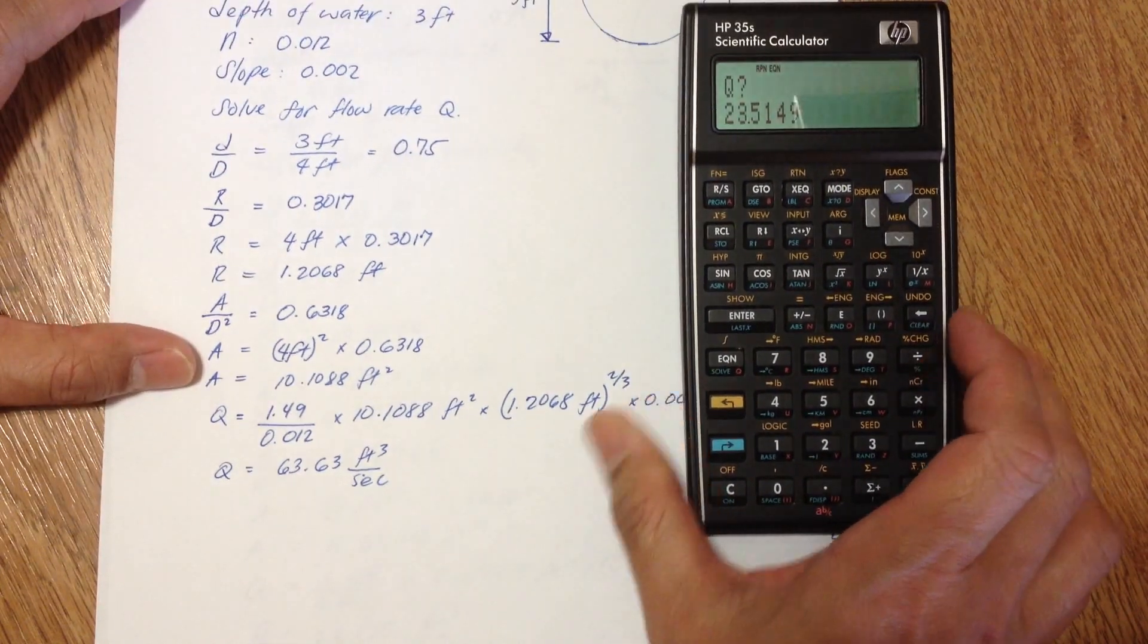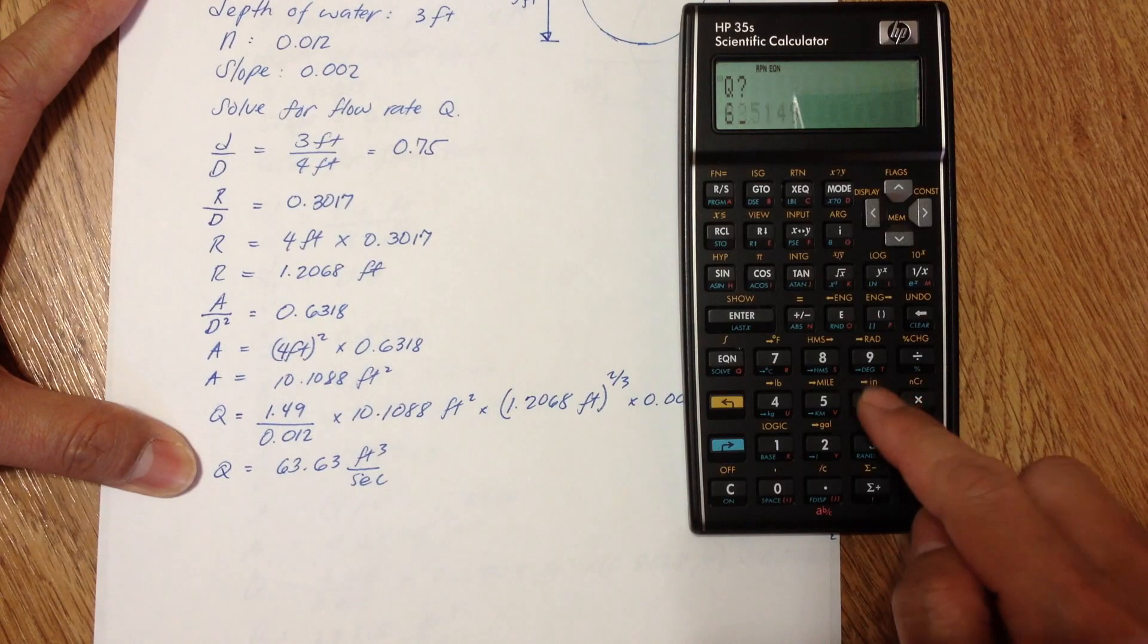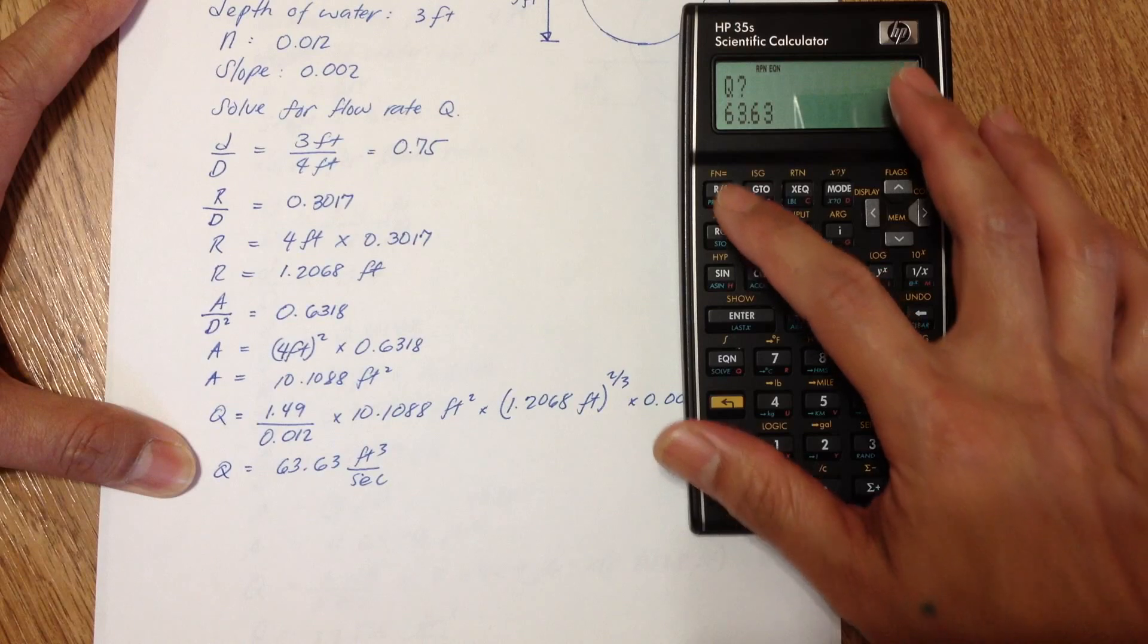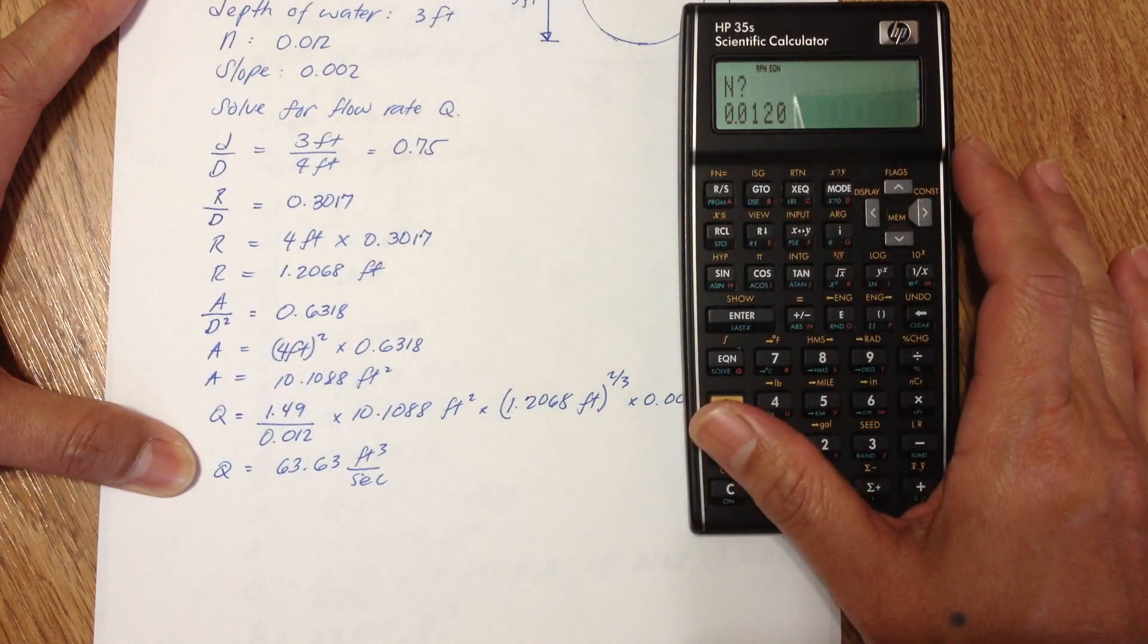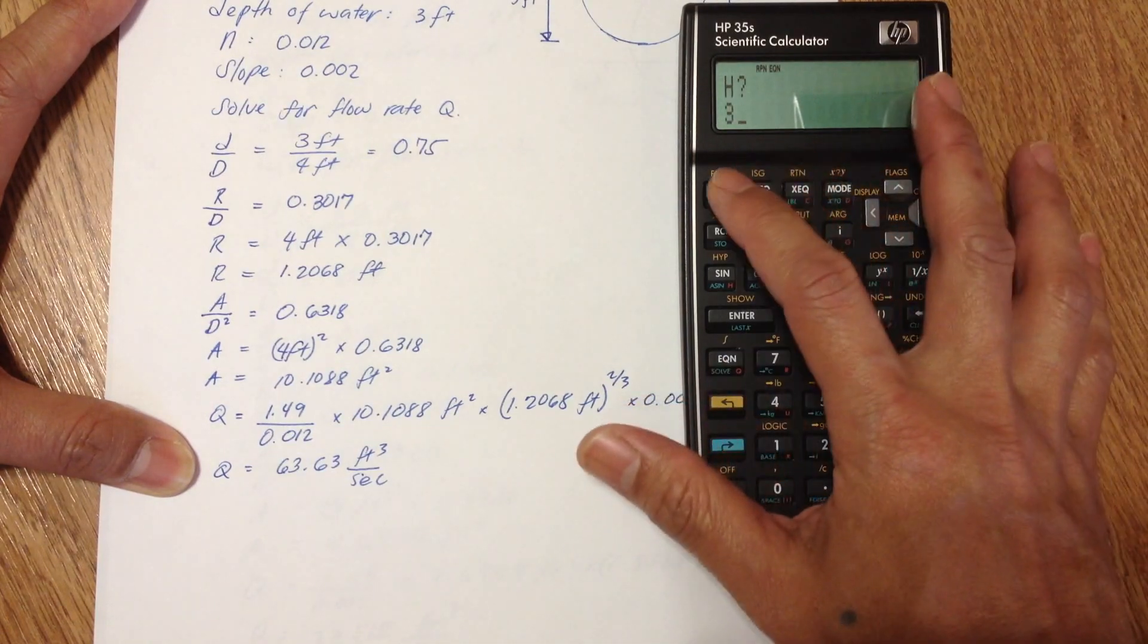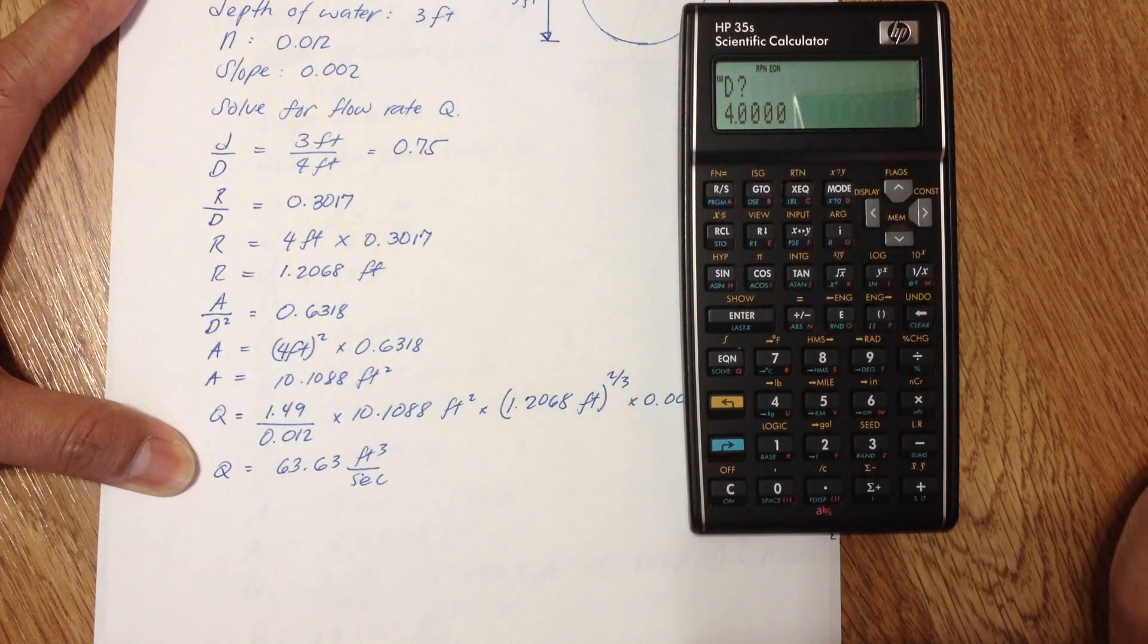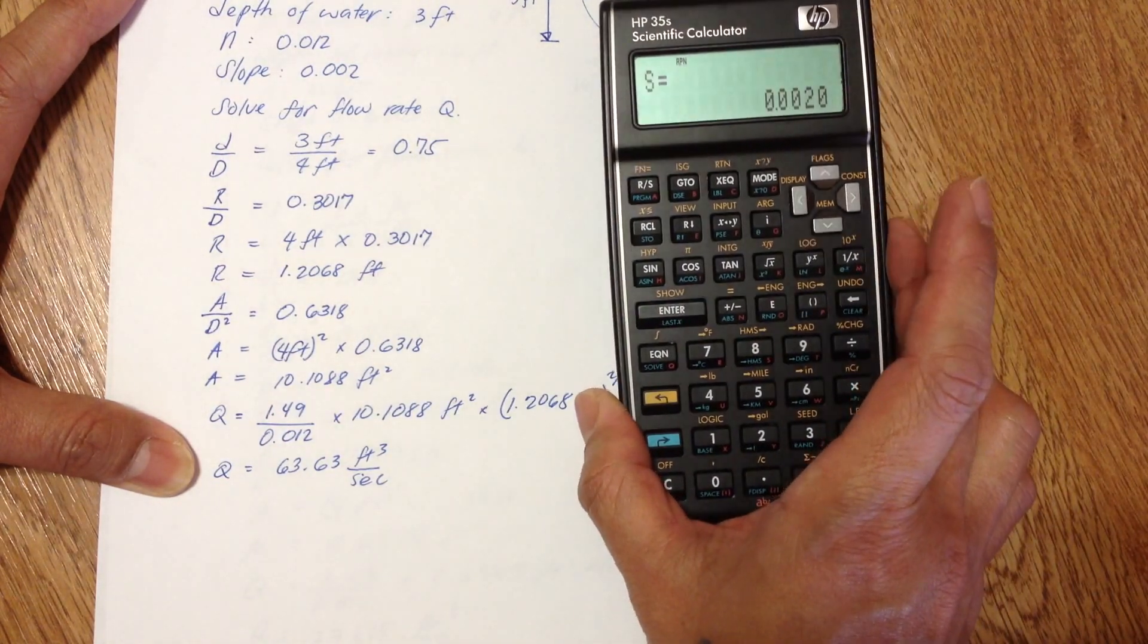Let's say if the Q is given, which is 63.63, run stop. C is 1.49, run stop. n is 0.012, run stop. H is 3, okay. And D is 4 feet. And it's going to solve for the slope. And there's the slope, which is 0.002.